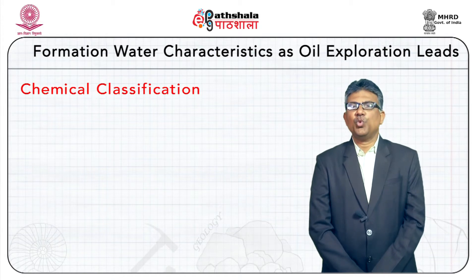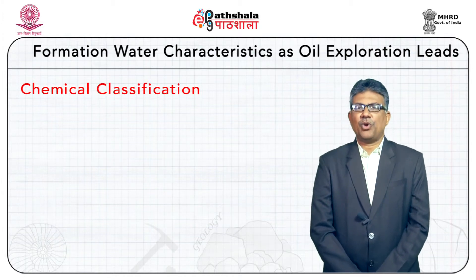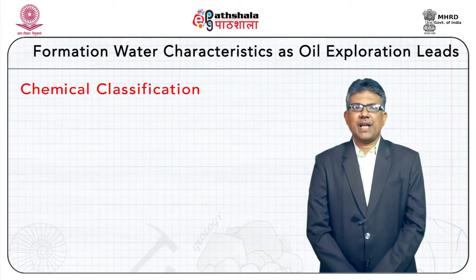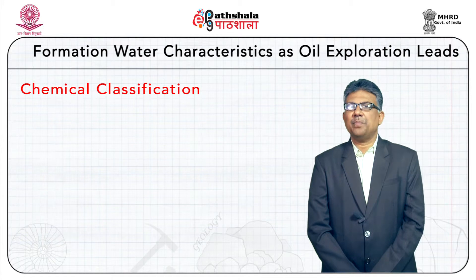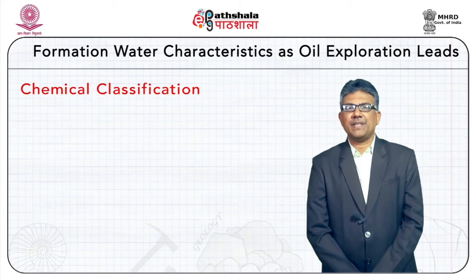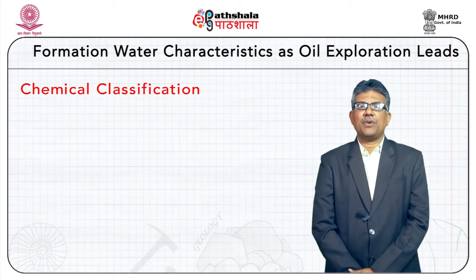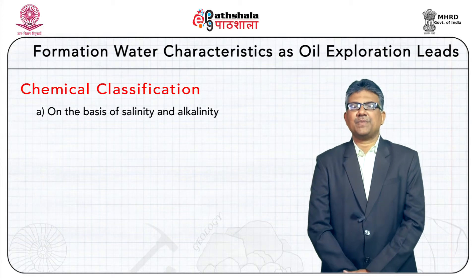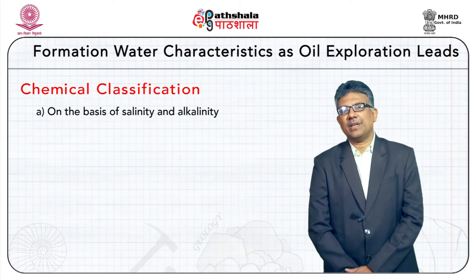There are two schemes of chemical classification of oil field waters: one based on salinity and alkalinity, and one depending on the dominant mineral ions present in solution. The first, proposed by Palmer in 1911, is based on salinity and alkalinity.